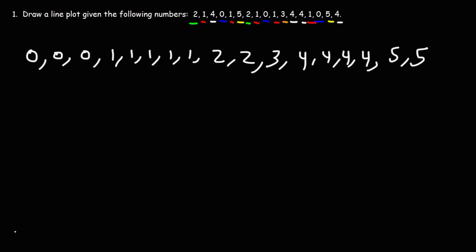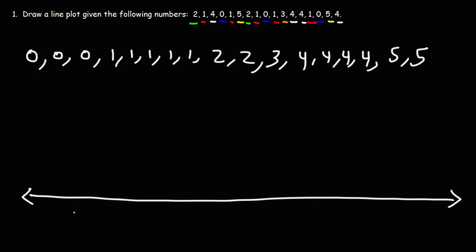So now we're going to put the data on a number line. Let's put the numbers in order first. The next thing we need to do is plot the number of values we have in our data set. So we have three zeros — we can put three dots or three X's on the number line. So let's use X.